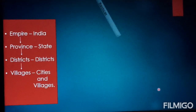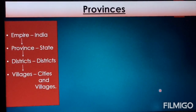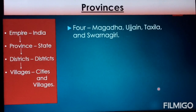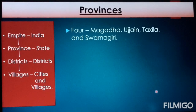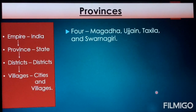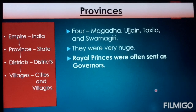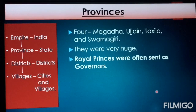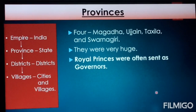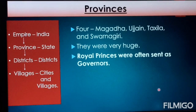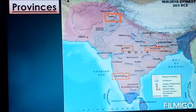Moving to provinces: just as India is divided into many states, the Mauryan Empire was divided into four provinces — Magadha, Ujjain, Takshashila, and Swarnanagiri. These provinces were very large, and usually royal princes were sent as governors to take care of them and carry out all responsibilities.